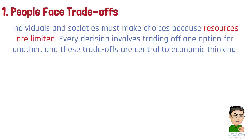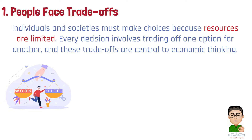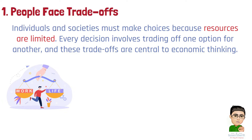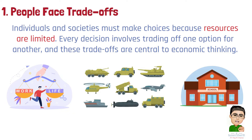Example 1: A parent deciding between working overtime to earn more money or spending more time with their children must weigh the additional income against the value of family time. Example 2: A government choosing between increasing military spending or investing in public education must consider the implications for national security versus the long-term benefits of an educated populace.